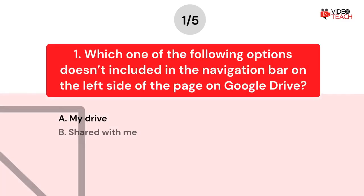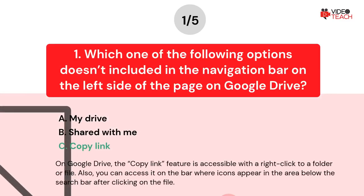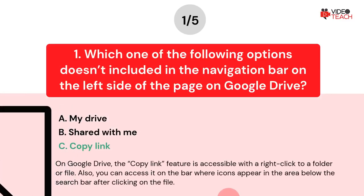The correct answer is option C. On Google Drive, the copy link feature is accessible with a right-click on a folder or file. Also, you can access it on the bar where icons appear in the area below the search bar after clicking on the file.